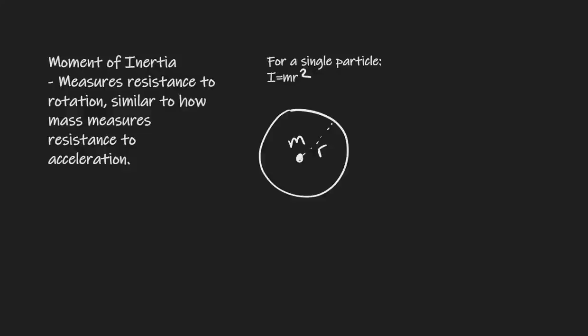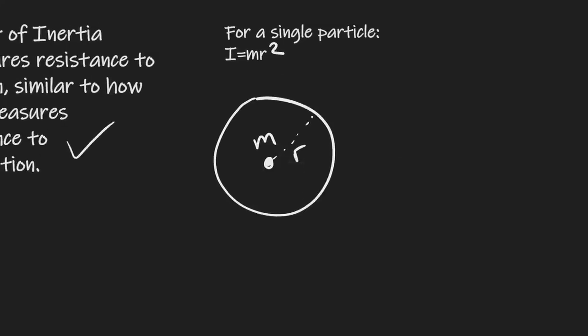Let's revise the whole of AQA engineering physics, starting with the moment of inertia. This measures the resistance to rotation and is pretty similar to mass in non-rotational physics. For a single particle, the moment of inertia is defined as the mass multiplied by the radius of rotation squared. If we have a mass M rotating around a point, the moment of inertia will be MR squared.